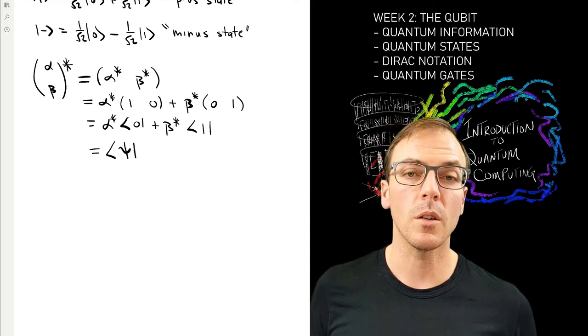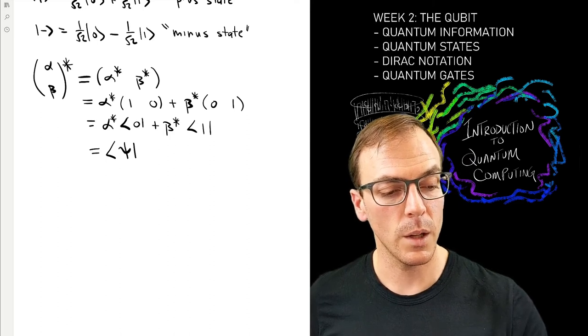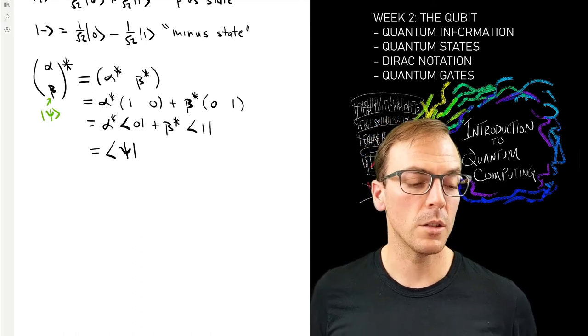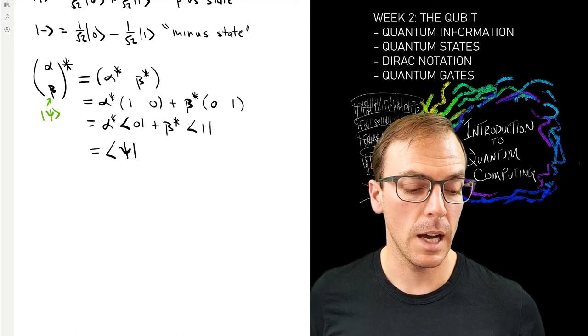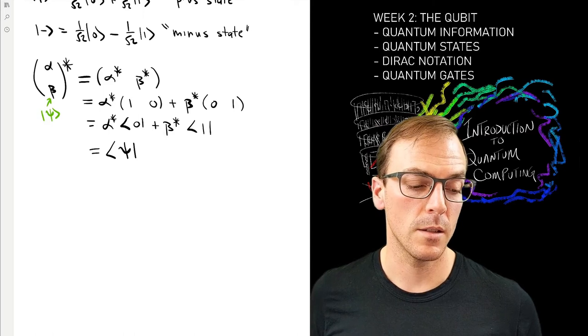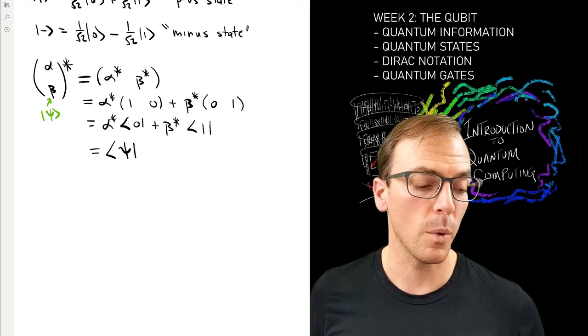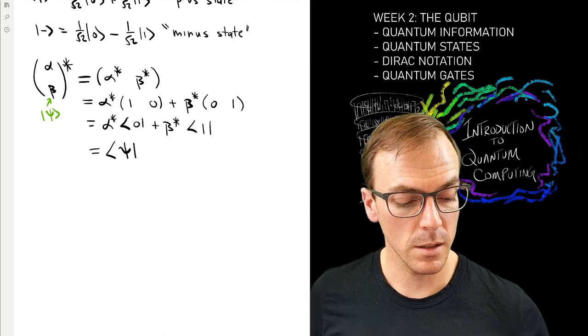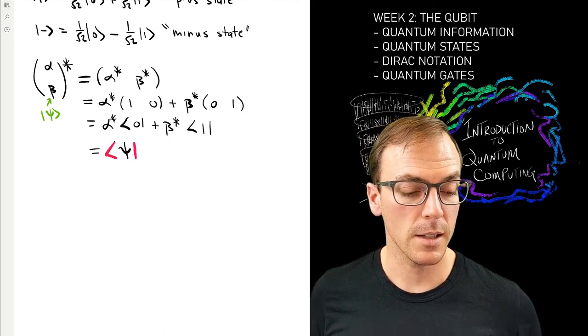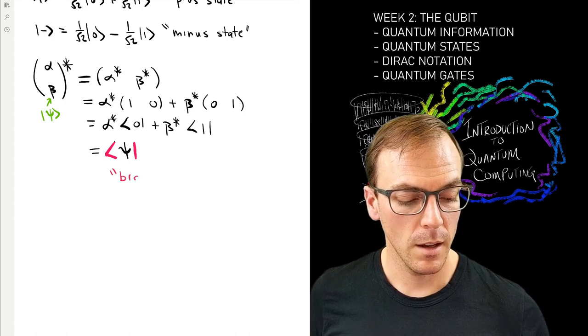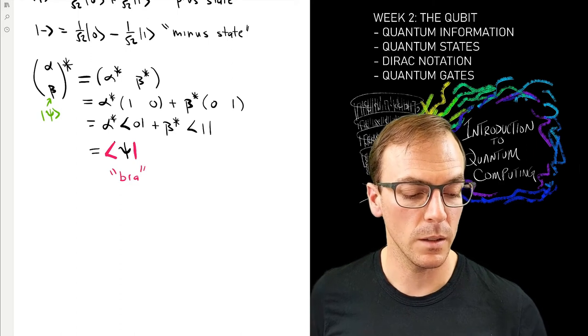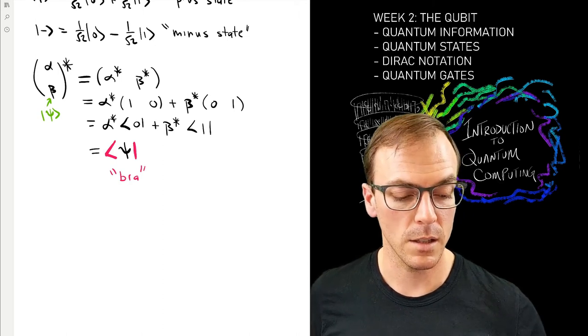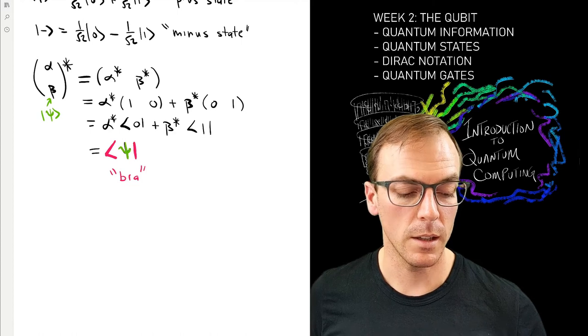So I give it the same label but I use this new notation, and I do the same thing with the original vector. So the original vector psi was this complex two-dimensional column vector. Now I have a complex two-dimensional row vector, and I can get from one to the other by taking this complex conjugate transpose.